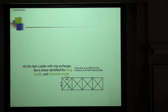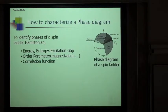Let me show one example of our works, which is the spin-ladder with ring exchange. The problem is how to characterize the phase diagram to identify the phase diagram of spin-ladder Hamiltonian. You can use the energy, entropy, excitation gap as usual.